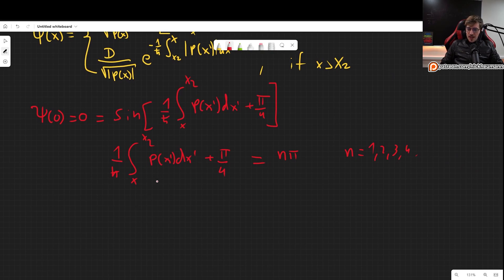So here we have it. Let's now subtract this and multiply by h bar. So we get that the integral, and now x begins at 0, so from 0 all the way to our turning point, integral of our momentum, this has to be equal to n minus 1 over 4, and then we multiply by pi h bar. And there we have it.